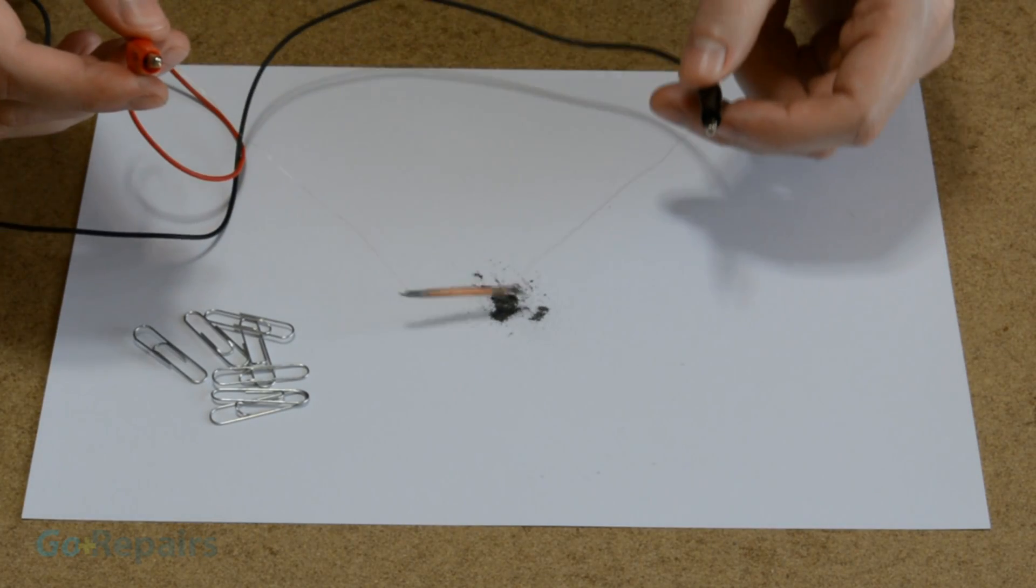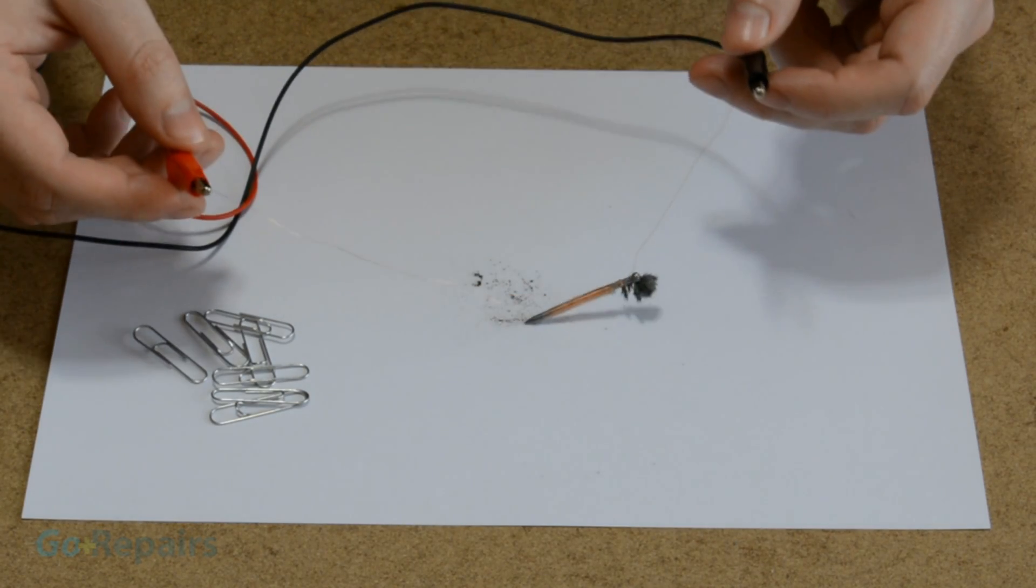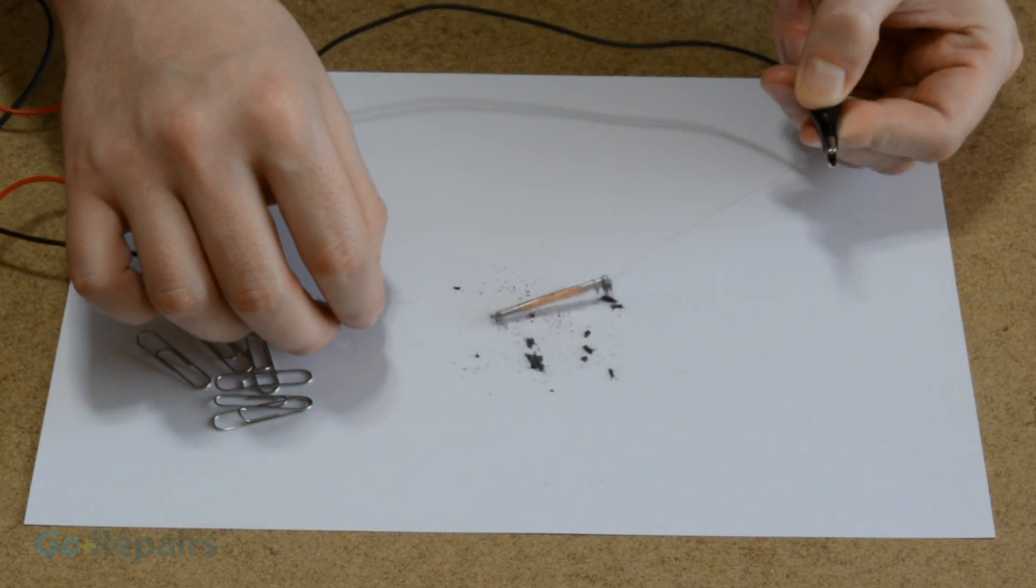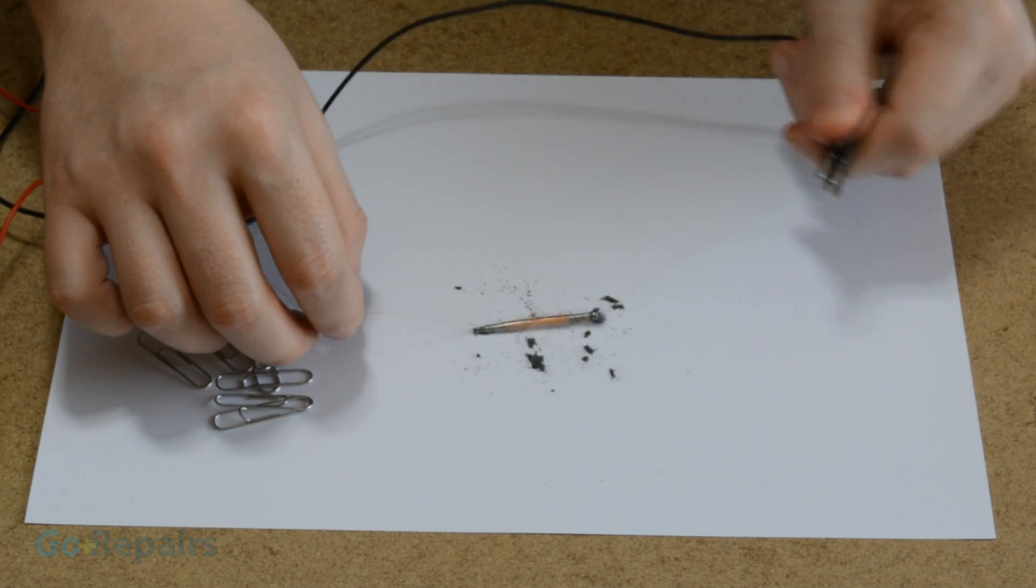It was quick to pick up the iron filings, but notice what happens when I remove the power. Some of the iron filings remain attached to the iron nail. This is because the iron nail retains some of the magnetism even when the power has been removed.